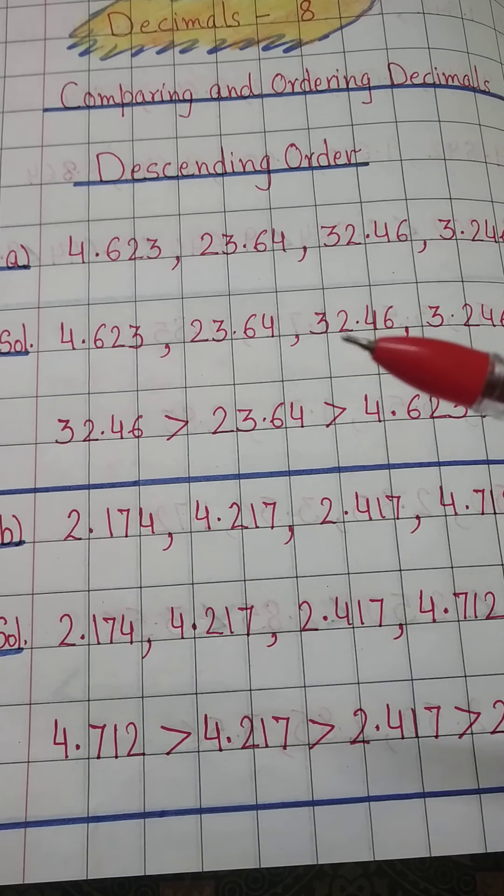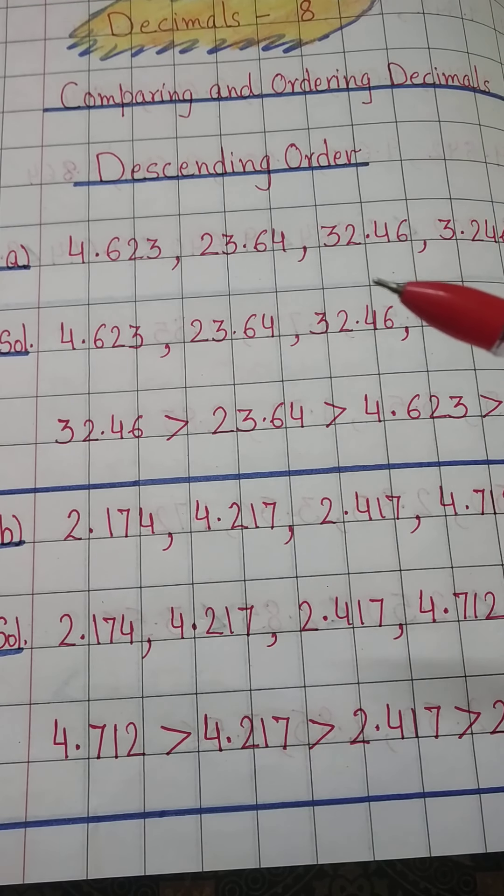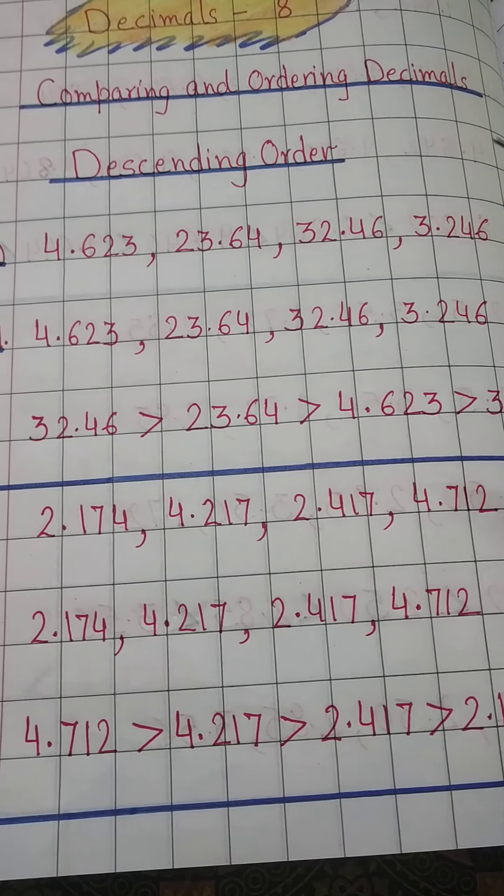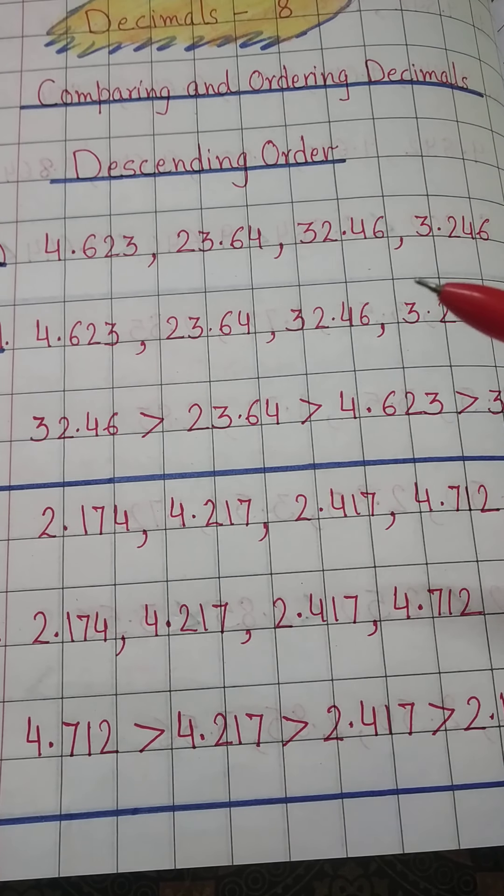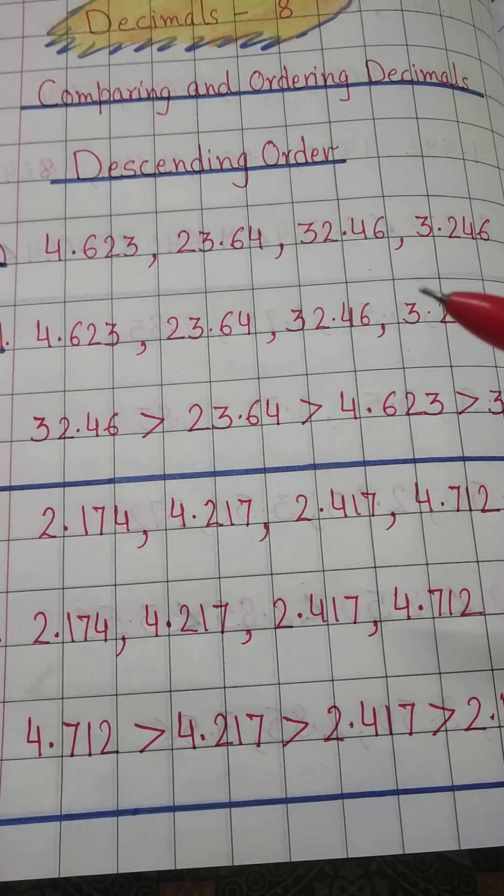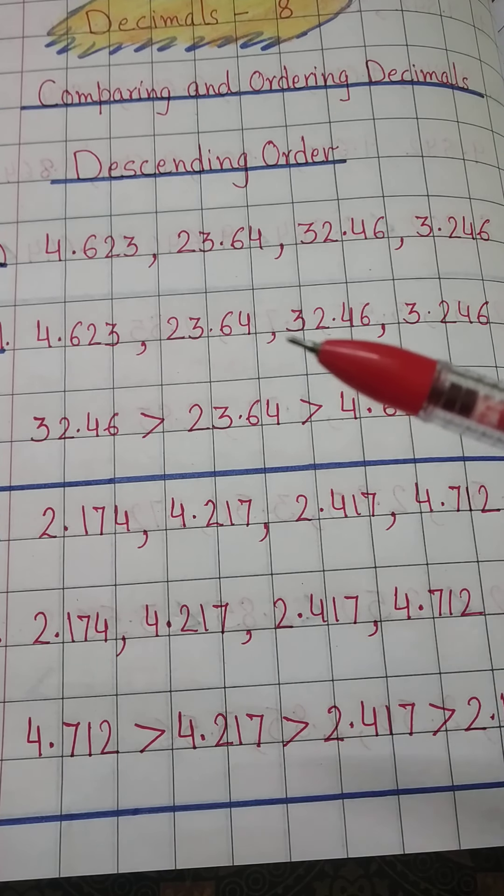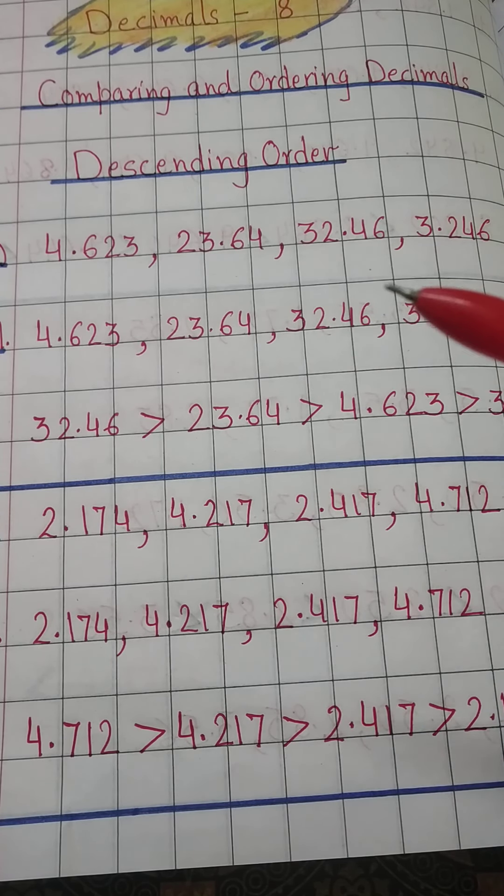The first question is 4.623, 23.64, 32.46, and 3.246. If we are in the habit of reading decimal numbers, we can easily recognize that before the decimal it is 4, 23, 32, and 3.